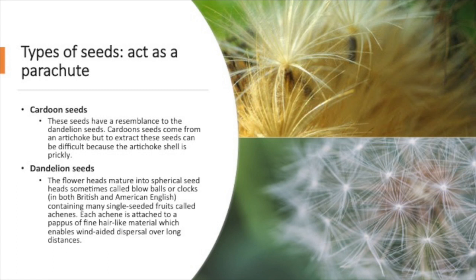But then you have your dandelion seed. And these are spherical seeds that are sometimes called blow balls or clocks. And they are containing many single seed fruits called achenes. But each achene is attached to a pappus, a fine hair-like material which enables wind aided dispersal over long distances. And as you see in this picture, you can see them flying. It almost looks like tiny little parachutes flying through the wind.